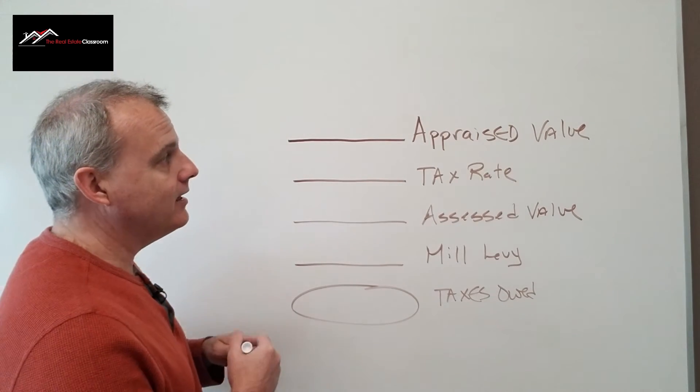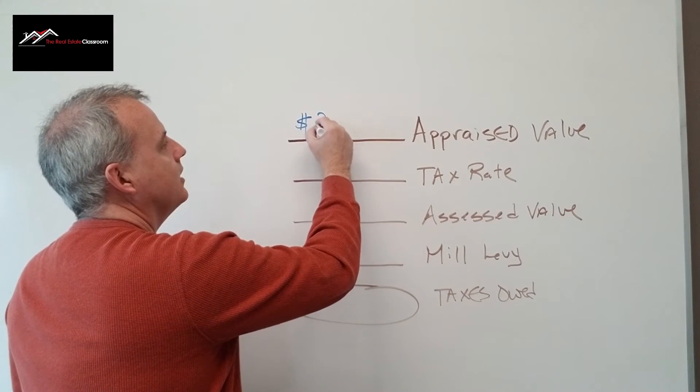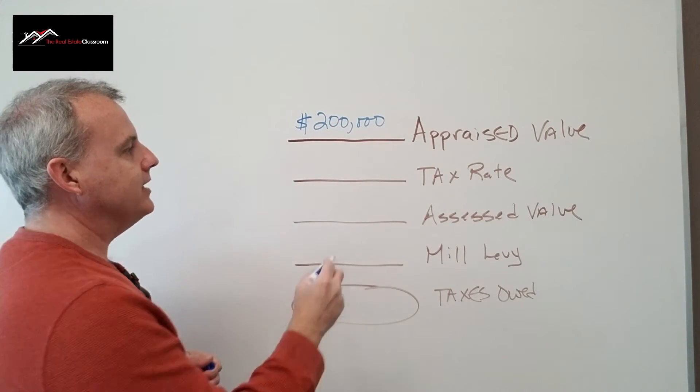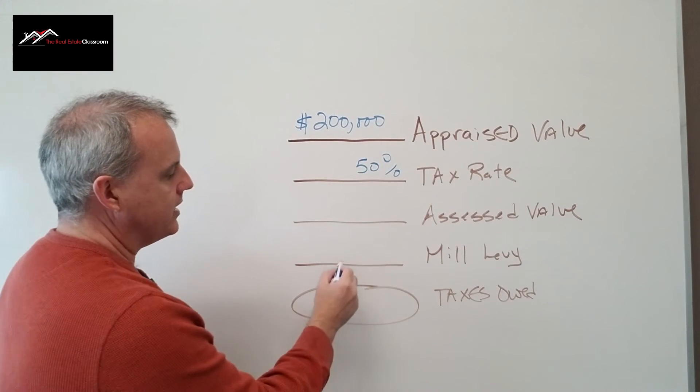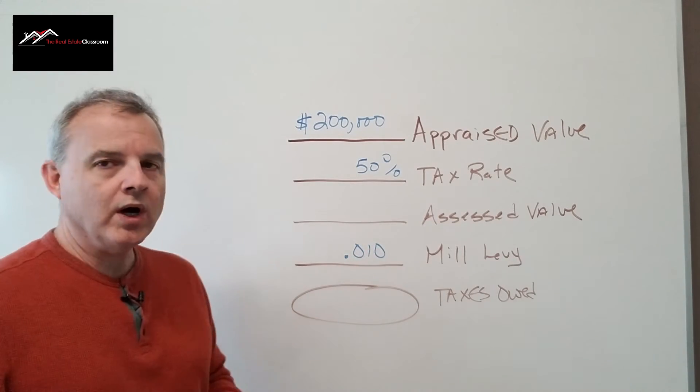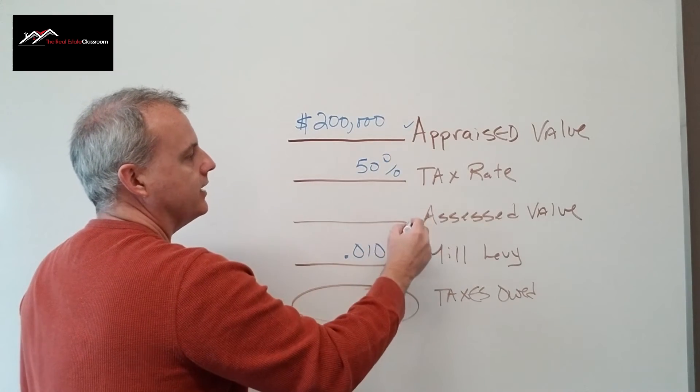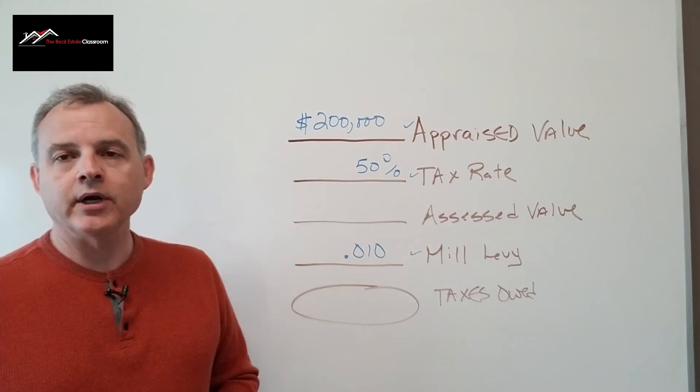In our example here, according to the math problem, we have an appraised value of $200,000 and a tax rate of 50%. It also said we have a mill levy of 0.010. We've gotten three out of the four things that we need to make our calculations to find out what our taxes are owed.